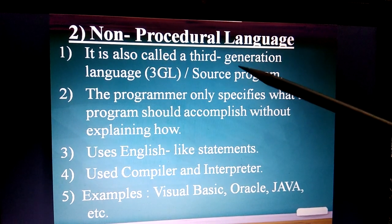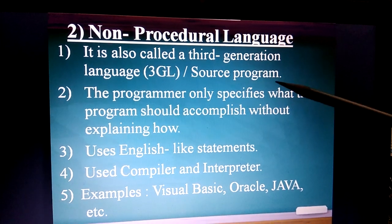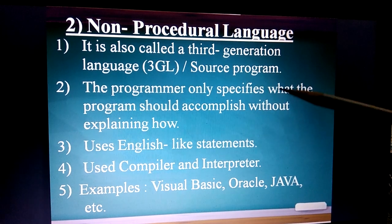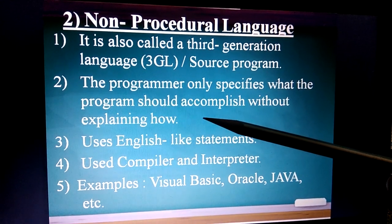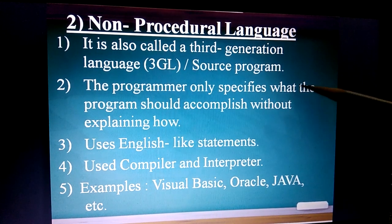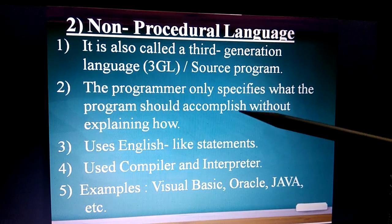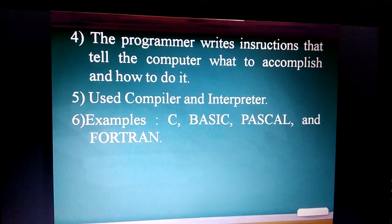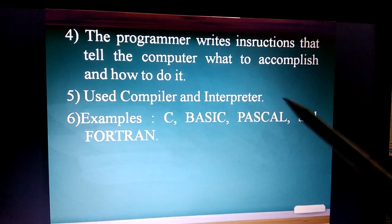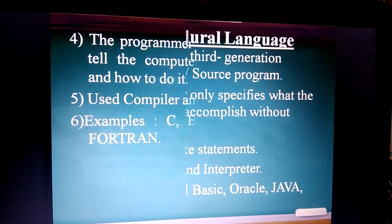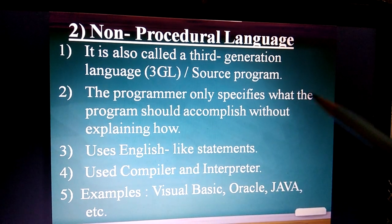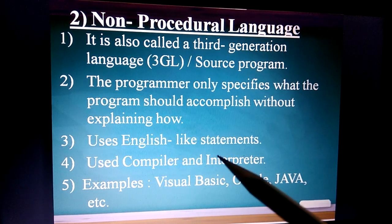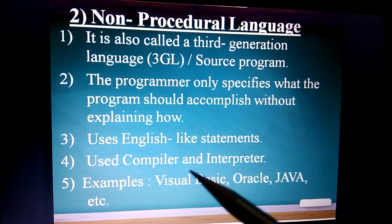Non-procedural language is also called a third generation language, or 3GL. In this language, the programmer only specifies what the program should accomplish without explaining how. In contrast, procedural language requires you to explain both what to complete and how to do it. Non-procedural language only requires explaining what to accomplish.